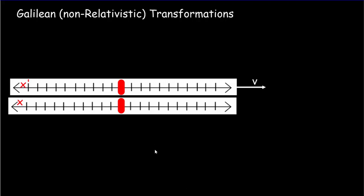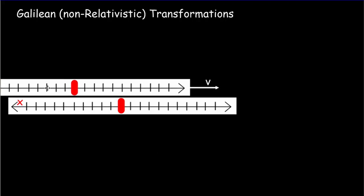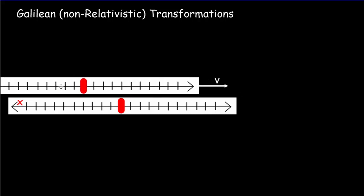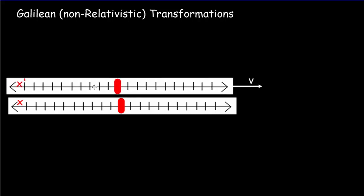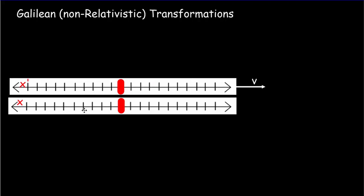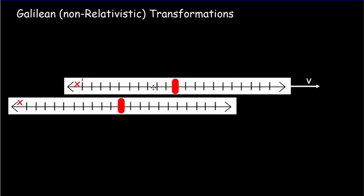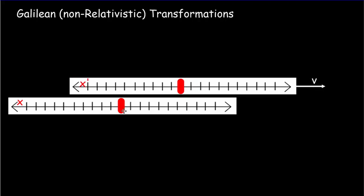Let's say we've got two observers, one moving with respect to the other at a constant velocity — so we've got two inertial reference frames. Here's our moving reference frame. We're going to start our clocks just as the two observers overlap each other, then let the clock run a bit and freeze things at an instant in time. Let's suppose that amount of time is t, and because time is absolute in non-relativistic physics, it's the same time in both frames.